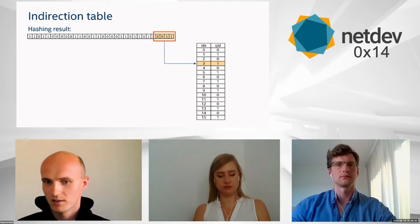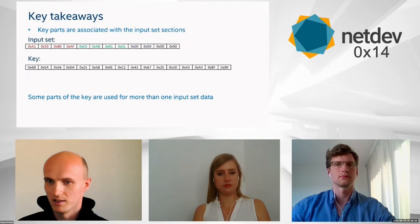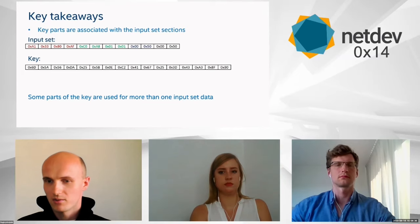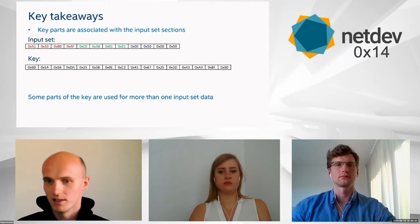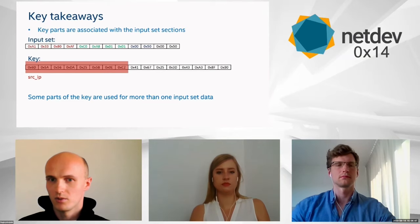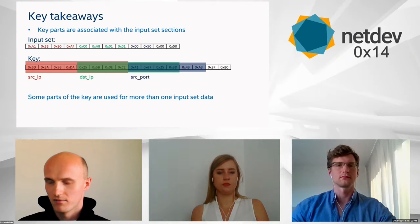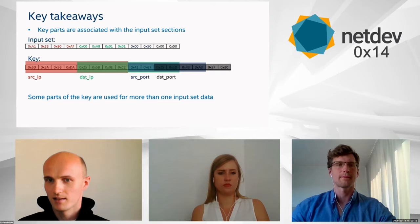This is the end of the RSS operation and the NIC starts processing the next packet. A key takeaway from how Toeplitz hash works: there is a clear connection between parts of the input set and parts of the key. We can distinguish which key bytes affect which field — bytes 0–8 for source IP, bytes 4–12 for destination IP — and some key bytes are shared across multiple fields.